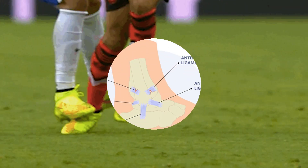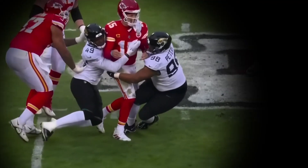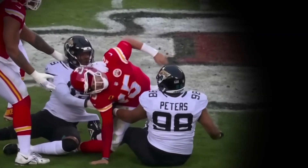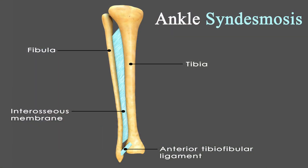A third and less common injury is known as the high ankle sprain. This results from a different mechanism of injury. When the ankle and foot are forcefully rotated, it damages what is known as the syndesmosis, a strong and fibrous joint that is supported by ligaments.